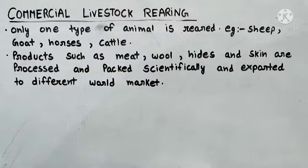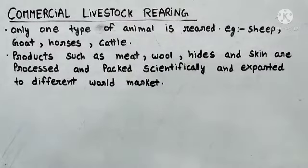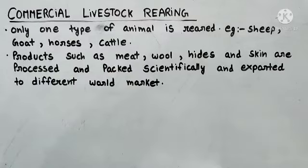In animals se humein meat milta hai, wool milti hai, haddi milti hai, unki skin milti hai. Phir in sab animal products ki hum processing karte hain — in items ko hum factory mein le jakar different kinds of goods and services produce karte hain. Aur jab ye items ban jaate hain toh hum inhe scientifically tarike se pack karte hain aur phir in packets ko export kar diya jaata hai.